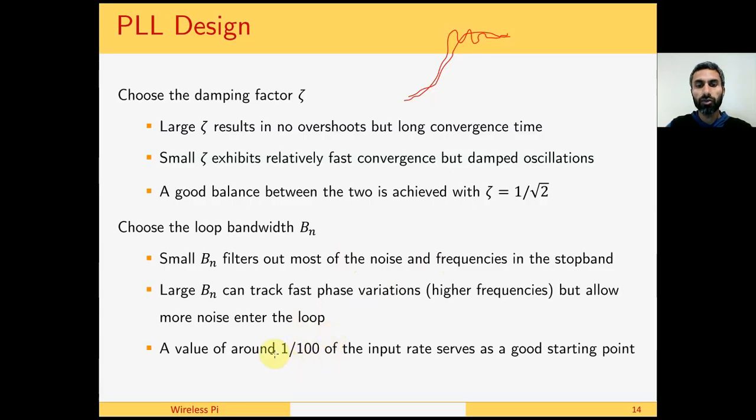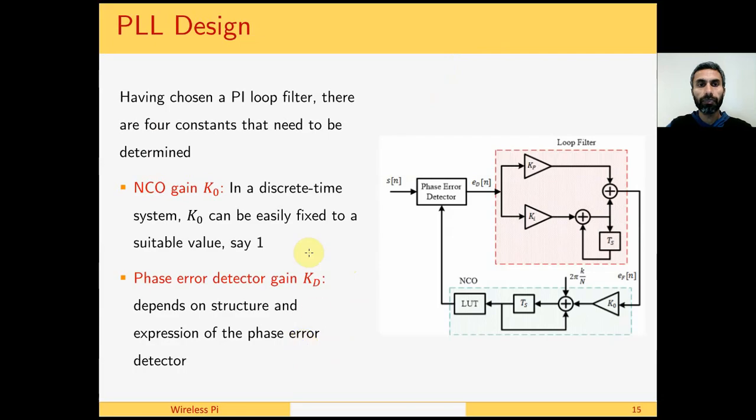In GNU radio, you will see the values 2 pi over 100 where 2 pi is a normalization factor. Having chosen zeta and BN,